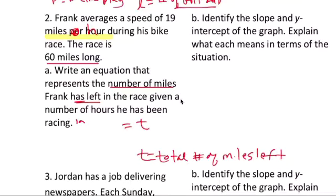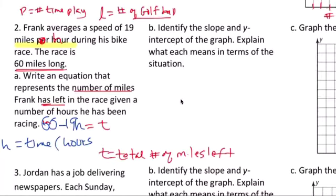He goes at 19 miles per hour. The race is 60 miles long. So he starts out with 60 miles minus 19 miles per hour. So H is time in hours. Okay, and then that's your equation.